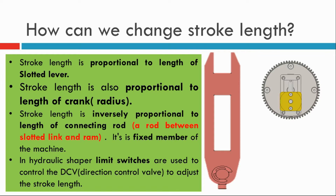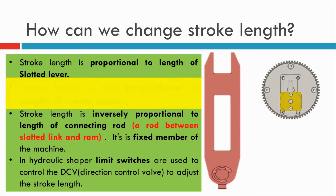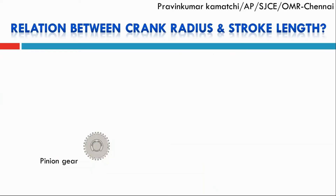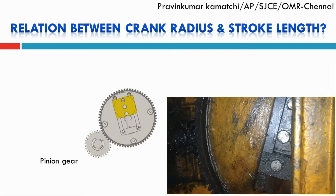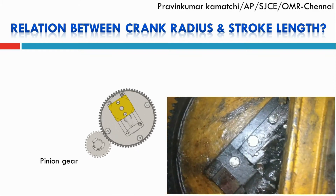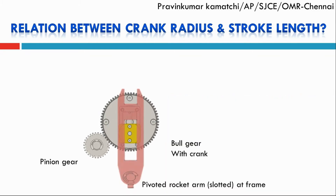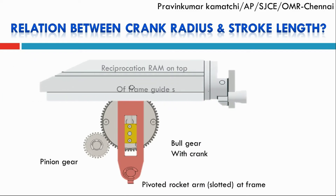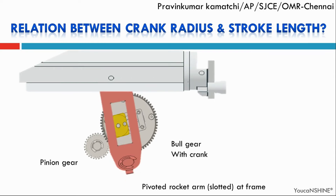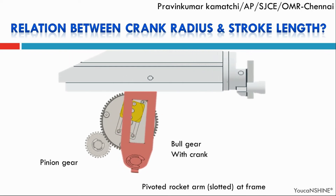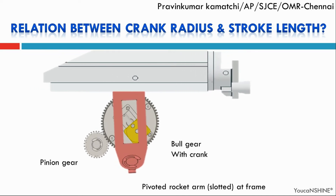We are going to focus on changing the crank radius — that is point number two. Let's see the relationship between crank radius and stroke length briefly. From the electric motor, through a shaft, a pinion gear is used to rotate the bull gear. A sliding crank is attached to the bull gear. A pivoted slotted arm has contact with the crank, and the ram is attached at the other end of the slotted arm. This assembly works as a quick return mechanism — an inversion of a single slider crank mechanism.